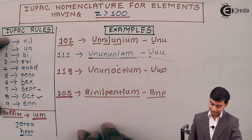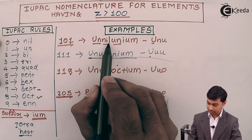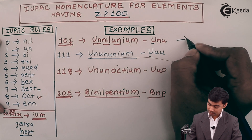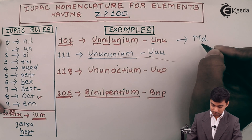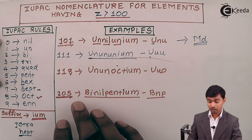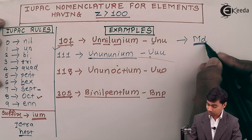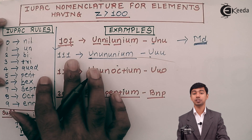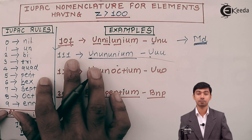For element 101, the IUPAC name is 'Unnilunium' and the symbol is 'Unu'. However, this element now has an official name — 'Mendelevium' — with symbol 'Md'. That means the conflict for this element has been resolved, and the IUPAC temporary name is no longer used. The IUPAC nomenclature is only useful until the original official name is given to a particular element.